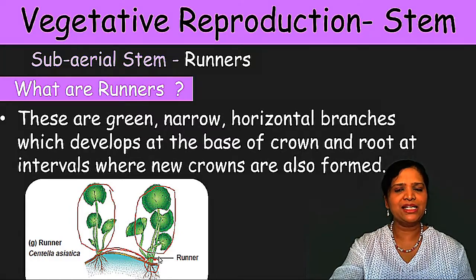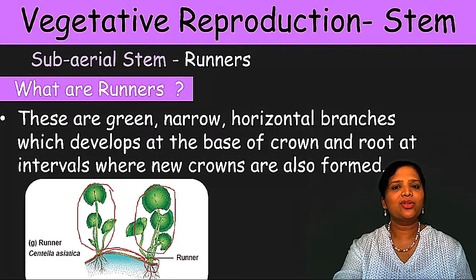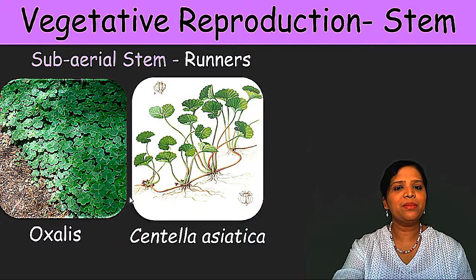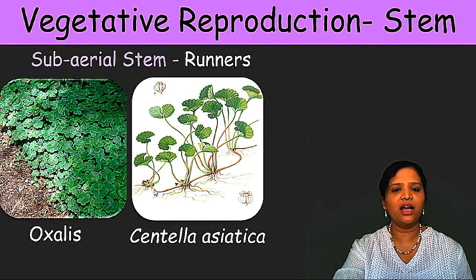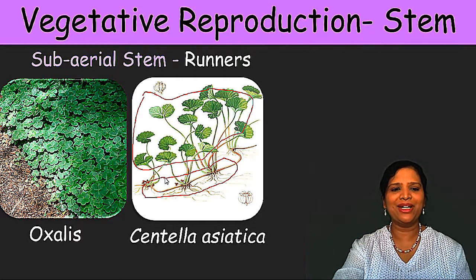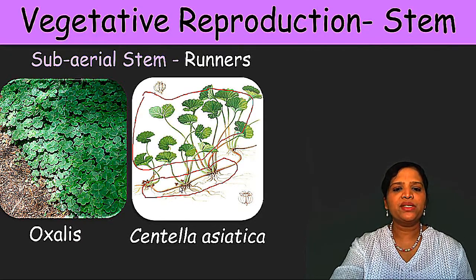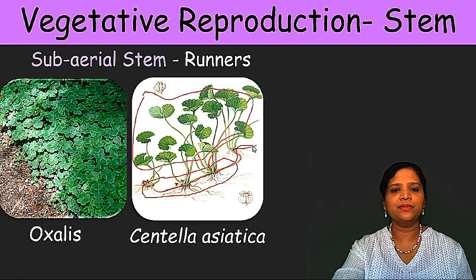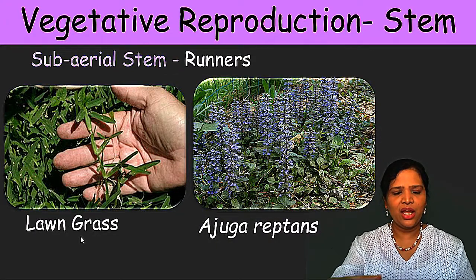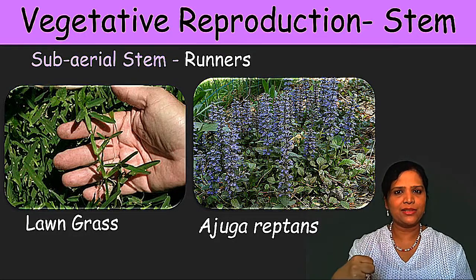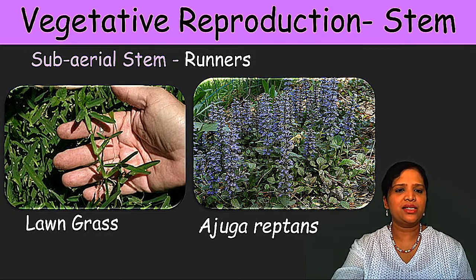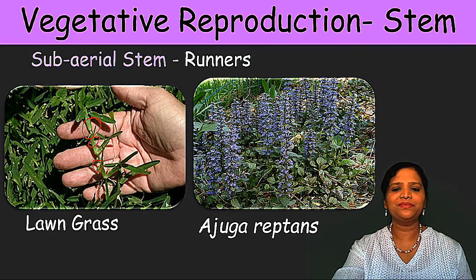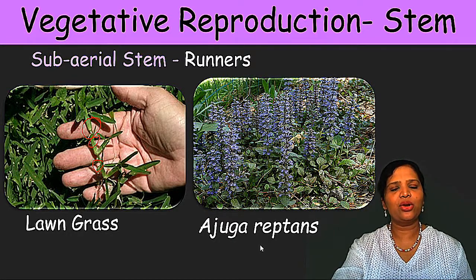Examples for sub-aerial runners are Oxalis and Centella asiatica. In Centella asiatica, the connection between plants sits on the soil above the ground but behind the leaves. Another favorite example is lawn grass — when you plant lawn grass it comes like a mat-like structure, and the mat-network connections between the grasses are called runners. Similarly, Ajuga reptans is also an example for runners.